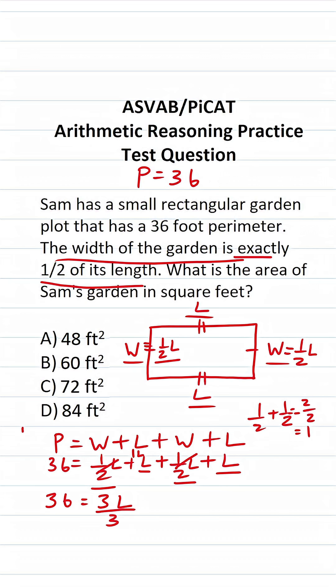Now we can solve for L by dividing both sides by 3. This crosses out. This says L is equal to 36 divided by 3, which is going to be 12. All right, so we know L is 12.